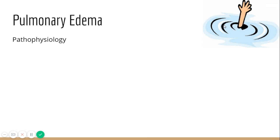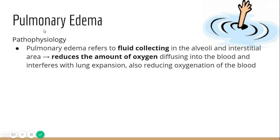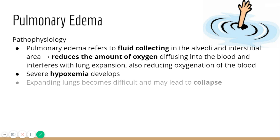We have a little drowning victim here, and we'll talk about why that is with pulmonary edema in just a second. So we have fluid that's collecting within the alveoli of the lung tissue — this is where gas exchange is supposed to be happening. We don't want fluid in there because that's going to disrupt things and reduce the amount of oxygen we can get in and out of the blood.